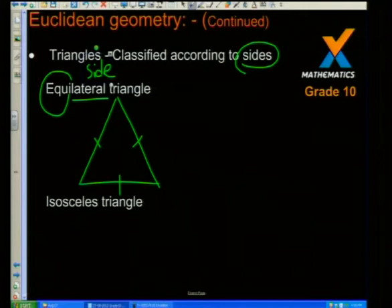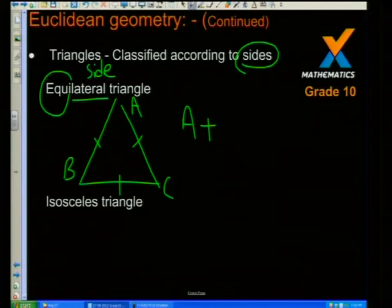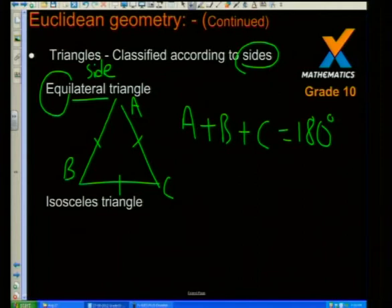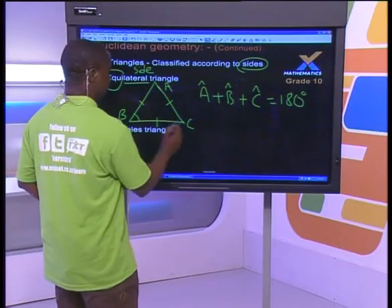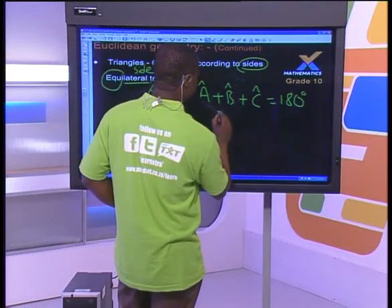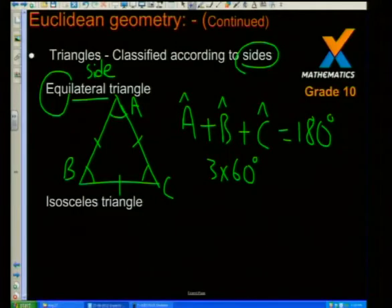One of the things you will have to know is that if you have a triangle A, B, C, the sum of angles in the triangle adds up to 180 degrees — this is what we called supplementary. So angles in the triangle equal 180. If you have an equilateral triangle, all the angles are also equal, so that means each angle is 60 degrees — 3 times 60 equals 180, or 180 divided by 3 equals 60 degrees.